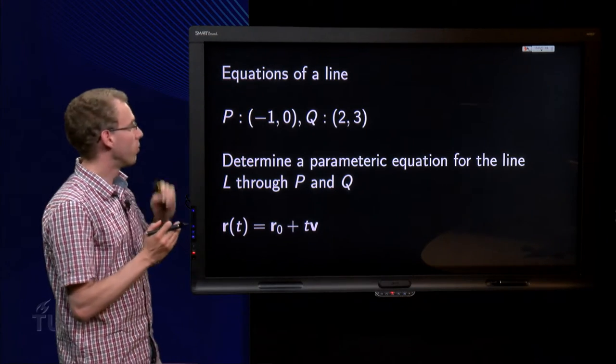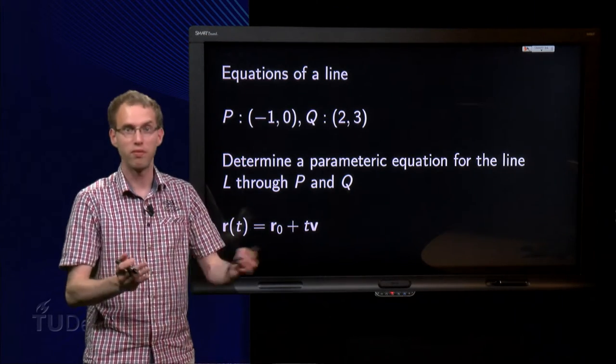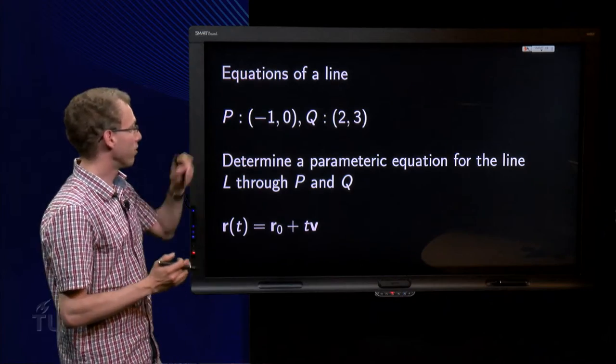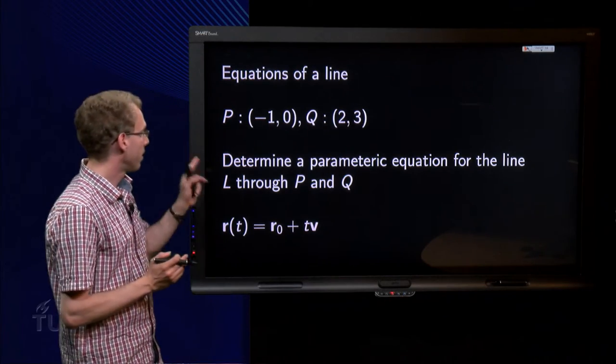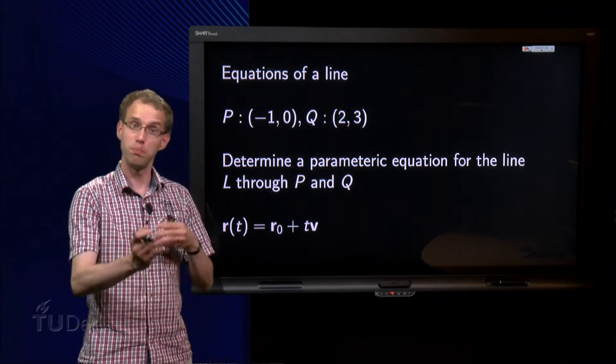First, we will look at the parametric equation of a line. We will do it in 2D in order to simplify the drawings a bit. We have two points, p and q. And the question is how can we find the parametric equation of the line L through p and q?